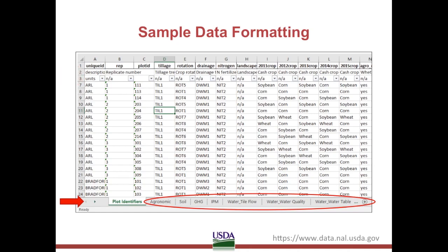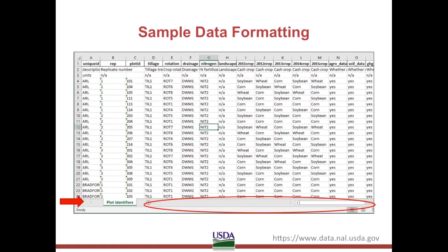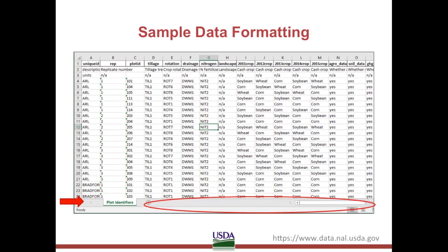First, we want to separate the worksheets into separate data files. So I will copy and paste the information on this first worksheet tab into a new document. Notice now, with the new document, I only have a single worksheet in this file. I will then have to separate out each worksheet from the original file in the same way. Because there were a lot of worksheets, this is an example of where planning on the front end can save some time when it comes time to submit your data. Ten worksheets means I have to repeat this process ten times.